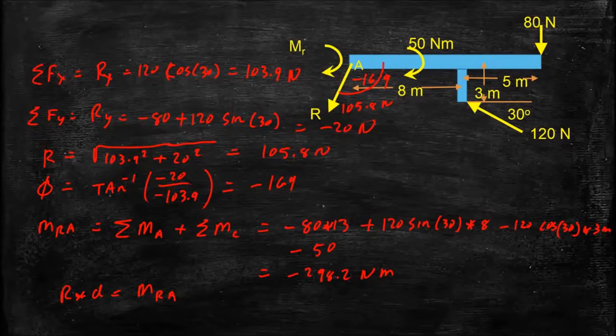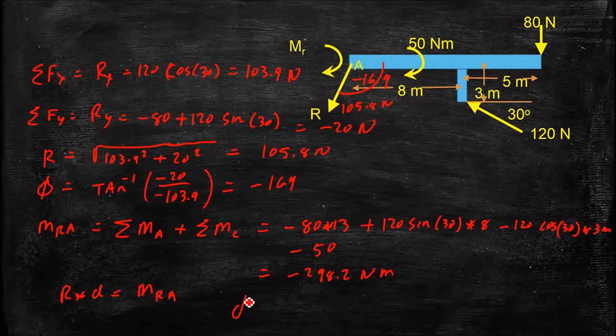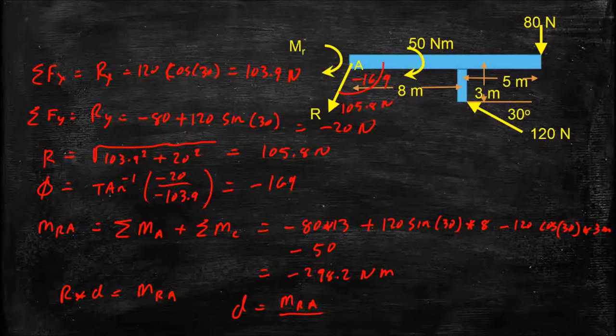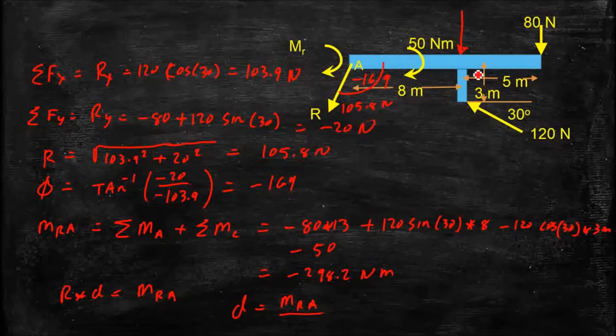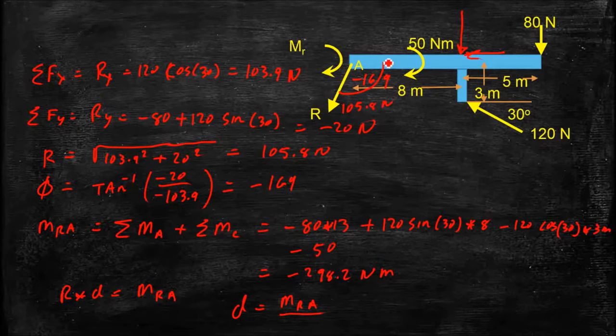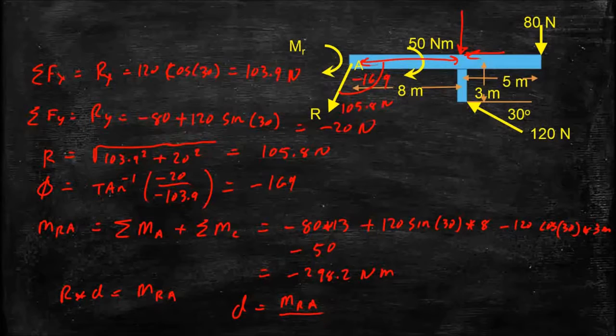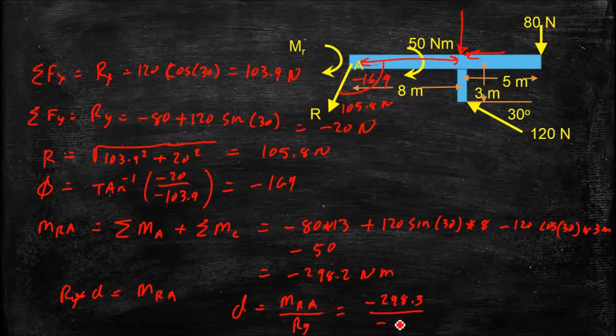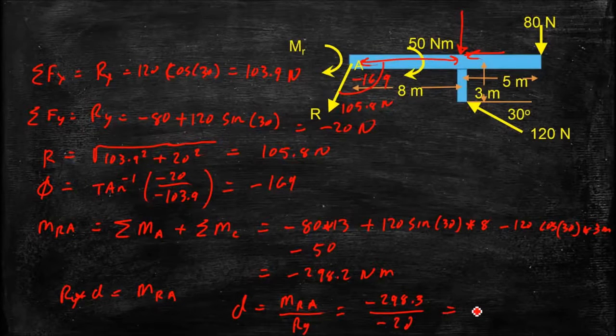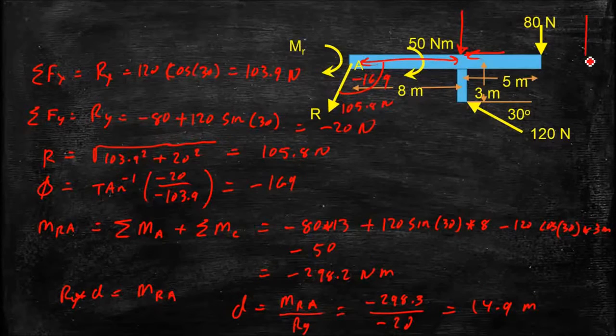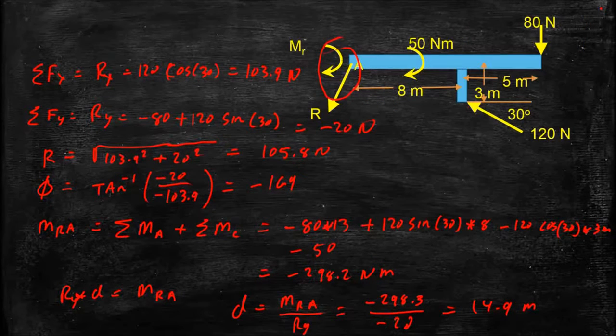So what I need to do is rearrange that a little bit, and I get the distance is going to be equal to the moment resultant at A that I had before, divided by, I only need to consider the Y component of that resultant force, right? Because the X component of that resultant force doesn't give us any moments at all. So I'm moving it in the X direction. I should have said that up front. So moving it in the X direction, I only have to consider the Y component of my resultant force. That's equal to my minus 298.3 divided by minus 20, and that gives me a distance of 14.9 meters, which is somewhere over here.